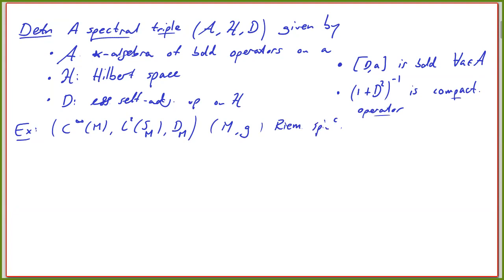We saw that this gives rise to a spectral triple. For instance, if you think about the circle, the eigenvalues of the Dirac operator are just the integers. That is actually the idea of a spectrum: it sits as a discrete set on the real line and accumulates at infinity, but nowhere else.